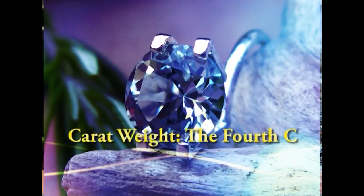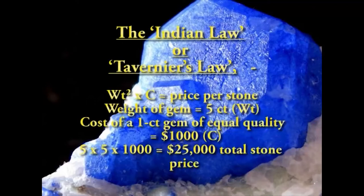Carat weight, the fourth C: weight in gems is calculated in metric carats where five carats equal one gram. Generally, as a gem's weight increases, so does the per-carat price. This relationship was first quantified by Willefane in 1572 for diamonds and is today most commonly referred to as the Indian law or Tavernier's law: price per stone equals weight squared times C, where C is the cost of a 1-carat gem of equal quality — for example, with C equal to $1,000, a 5-carat stone would price at 5 × 5 × $1,000 = $25,000.